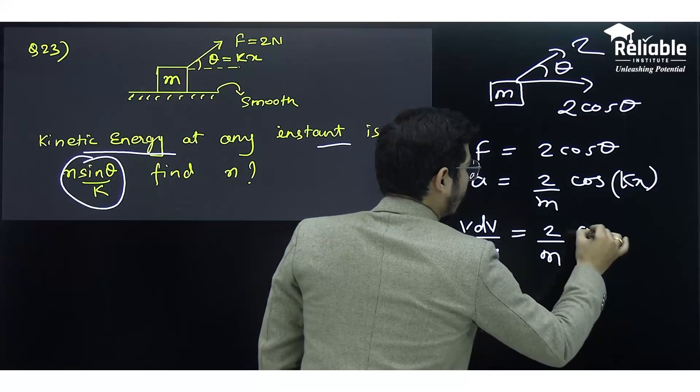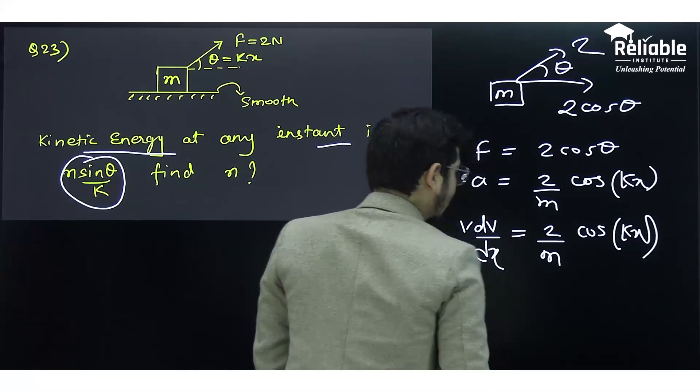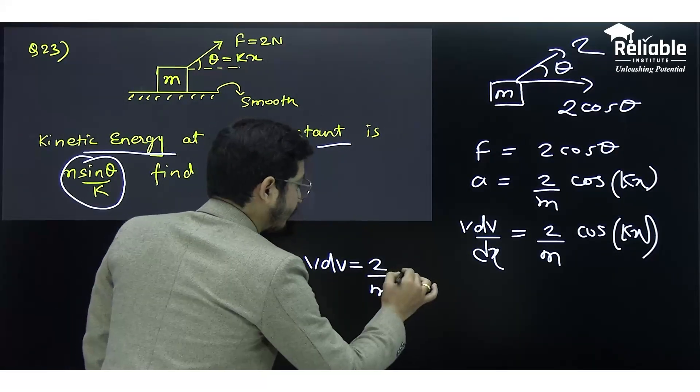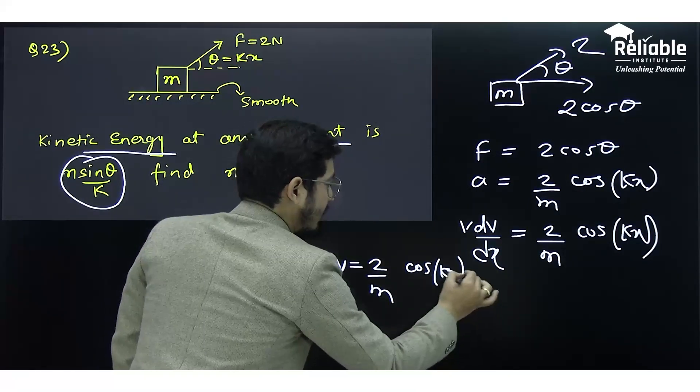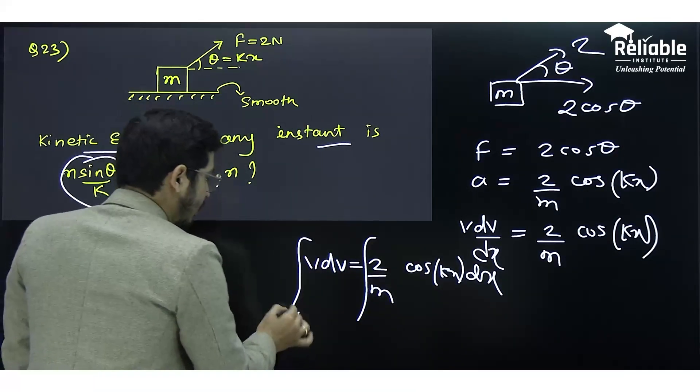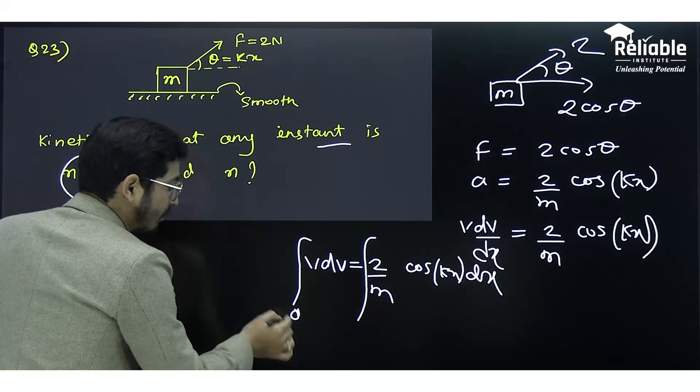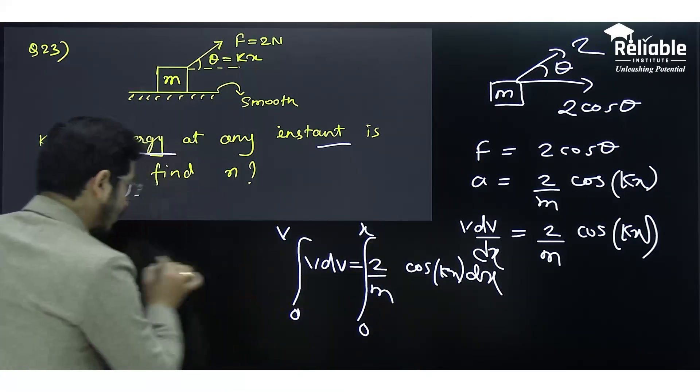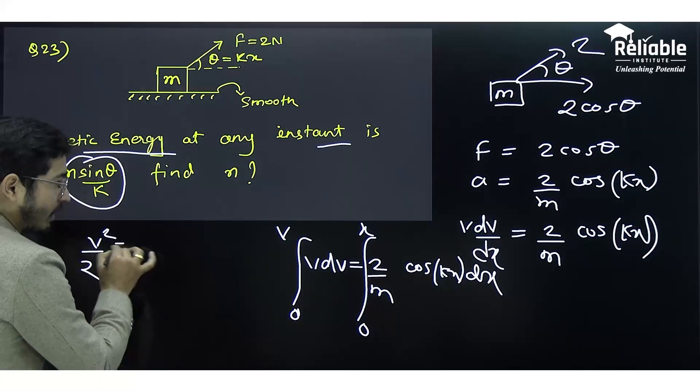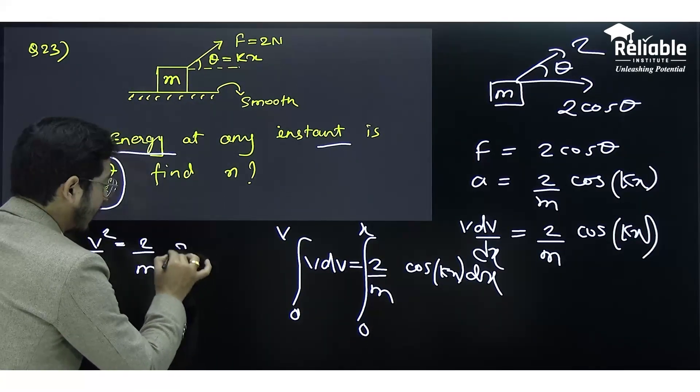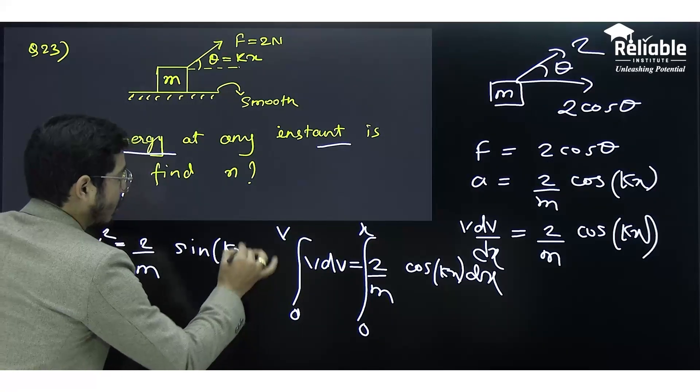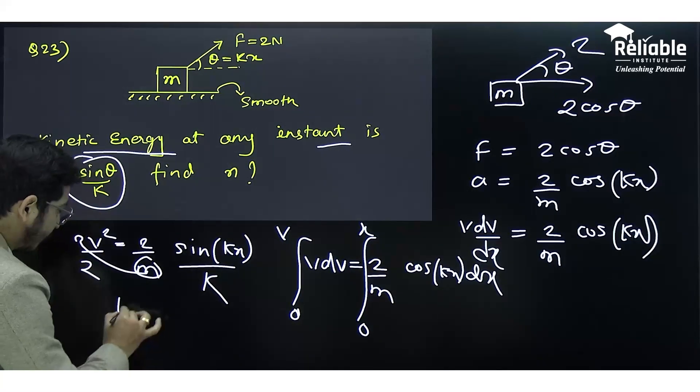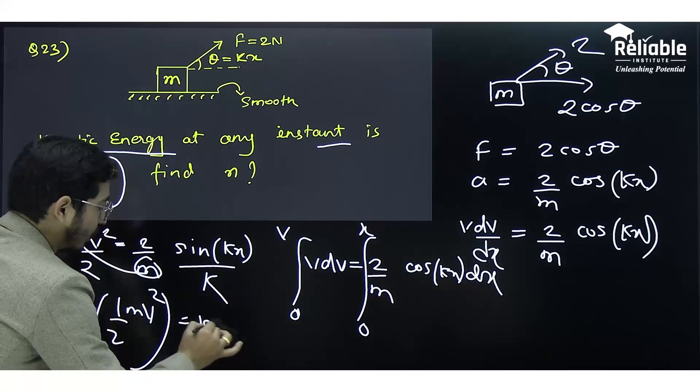So v dv = (2/m)cos(kx) dx. Let us integrate both sides. The limits will be velocity from 0 to v and x from 0 to x. The left side becomes v²/2. On the right side, we get sin(kx)/k.